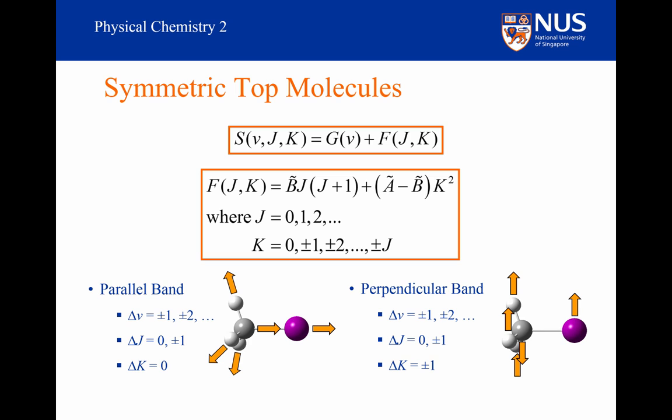Now this is going to lead to a significant difference in the band structure. Remember, when delta K was equal to 0, we could ignore the A minus B term when we are looking at differences in energy between two energy levels, because they will cancel. But now we can't. So this leads to a difference in the spectra.